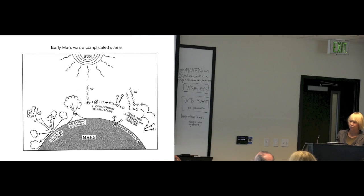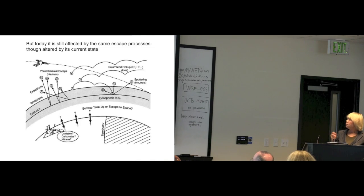Early Mars was a complicated scene. There were impacts, volcanic outgassing, photochemistry going on, and these solar wind-related processes, all of the pickup and sputtering. And of course on the surface there were surface atmosphere interactions going on too. Current Mars is pretty much the same on some ends. There's not impact going on and the photochemical schemes changed, but it's still happening. All these solar wind interaction related processes are still happening.